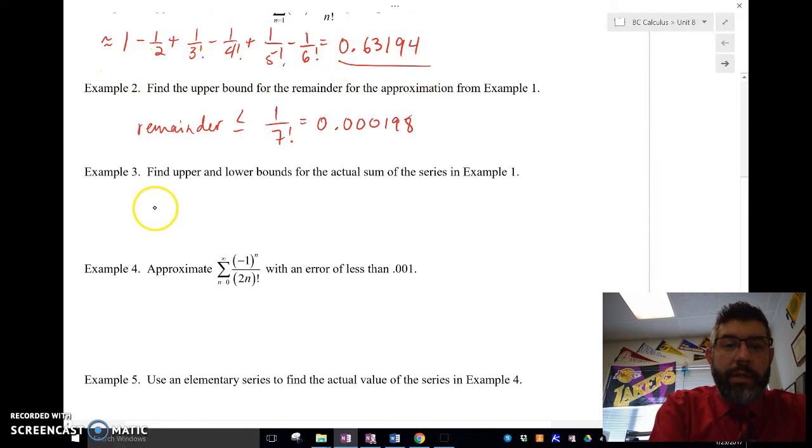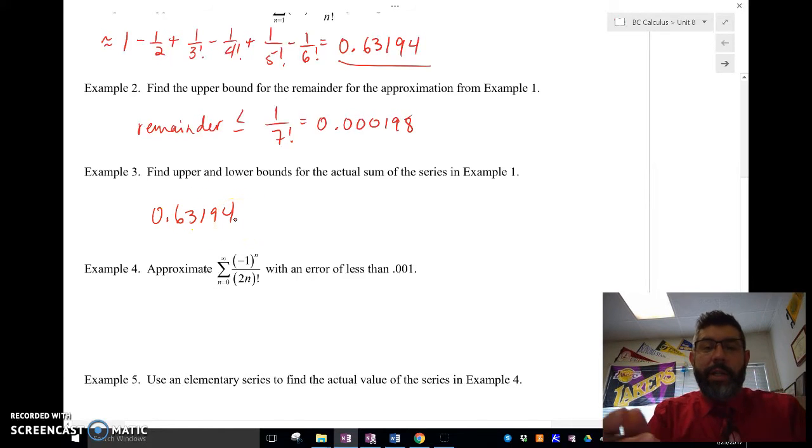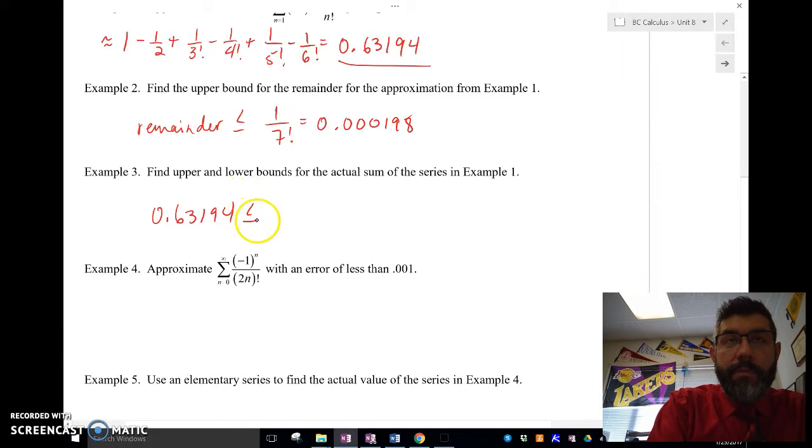somewhere between 0.63194 because that's what I calculated it to be. I approximated it to be for the first six terms. And that actual value, let me go and write this series in here.